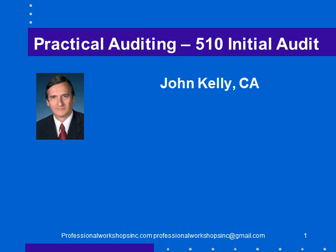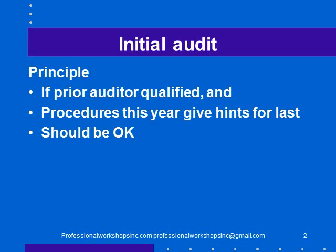The principle of this section is basically that if the prior auditor is qualified, and if the procedures we do which give hints about last year don't show that there's anything wrong in last year's numbers, then we should be okay. Roughly all we have to do is check that the prior auditor was qualified, pay attention to the procedures we do this year, and maybe take a few looks at the opening balances as needed.